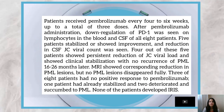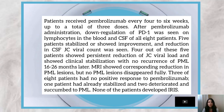Patients received pembrolizumab every four to six weeks, up to a total of three doses. After pembrolizumab administration, downregulation of PD-1 was seen on lymphocytes in the blood and in CSF-evaluated patients. Five patients stabilized or showed improvement and reduction in CSF JC viral count. Four of those five showed persistent reduction of JC viral load and clinical stabilization with no recurrence of PML from 16 to 26 months later. MRI showed corresponding reduction in PML lesions, but no lesions disappeared fully. Three of eight patients had no positive response; one had already stabilized, and two deteriorated and succumbed to PML. None of the patients developed IRIS.